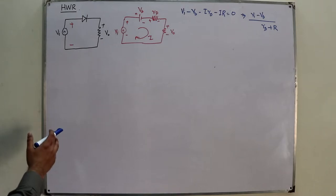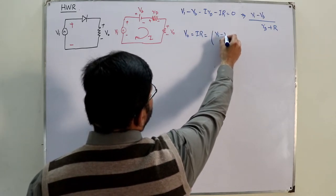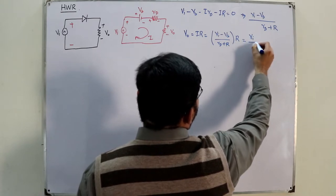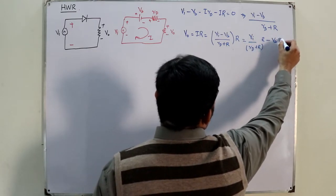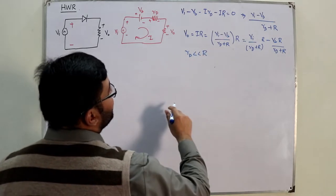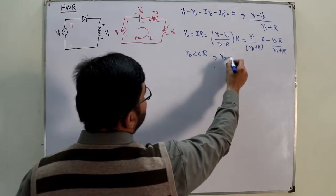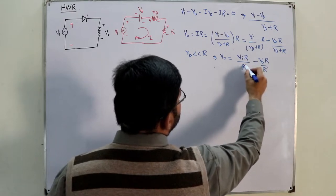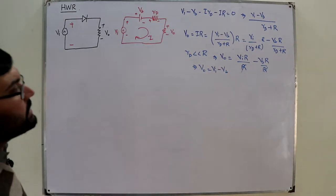So v_naught equals i times R, which gives v_naught equals (v_i minus V_b) divided by (R_d plus R), times R. This splits into v_i times R over (R_d plus R) minus V_b times R over (R_d plus R). Since R_d is much smaller than R, this simplifies to v_naught equals v_i minus V_b.